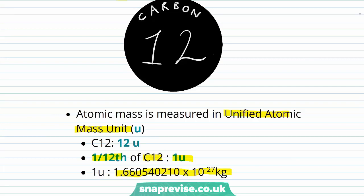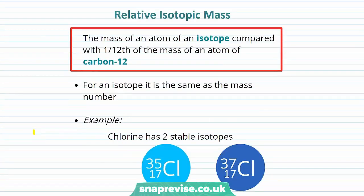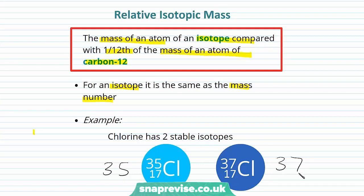Let's begin by looking at relative isotopic mass. The definition is the mass of an atom of an isotope compared with 1/12 of the mass of an atom of carbon-12. For an isotope it's the same as its mass number. Looking at this example with chlorine's two stable isotopes — chlorine-35 and chlorine-37 — the relative isotopic mass of chlorine-35 is 35, and the relative isotopic mass of chlorine-37 is 37. It really is as straightforward as that.